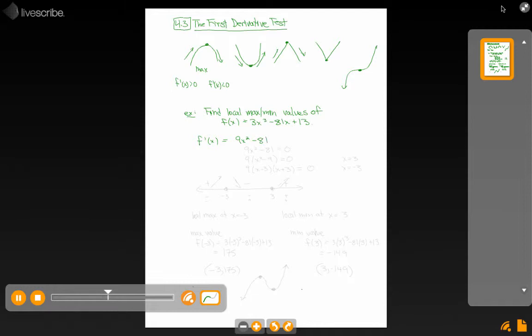To find critical values we need to see if there's anywhere where that's undefined or zero. Well it's never undefined, but to solve when does this equal zero, I'll factor it: x squared minus 9, so x minus 3 times x plus 3. So I have two critical values, x equals 3 and x equals negative 3.